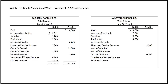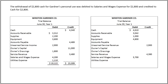A debit posting to salaries and wages expense of $1,500 was omitted, which has understated the salaries and wages expense by $1,500. To correct the balance, we must add $1,500 to salaries and wages expense. Additionally, the withdrawal of $2,800 cash for Gardner's personal use was debited to salaries and wages expense for $2,800 and credited to cash for $2,800. This should be part of owner's drawings and not salaries and wages expense. Therefore, from the balance of salaries and wages expense, we deduct $2,800, decreasing it to $2,900.